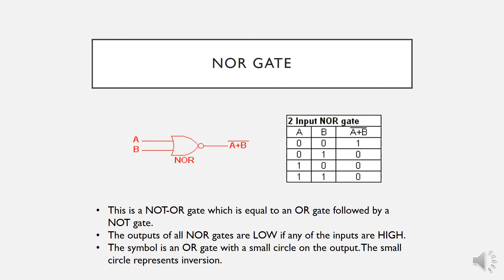The NOR gate is almost similar to the NAND gate, but this time instead of using an AND gate, it is a NOT-OR — meaning you have an OR operation followed by an inverter. So the output is A OR B, inverted. The output will be high only if both inputs are low.